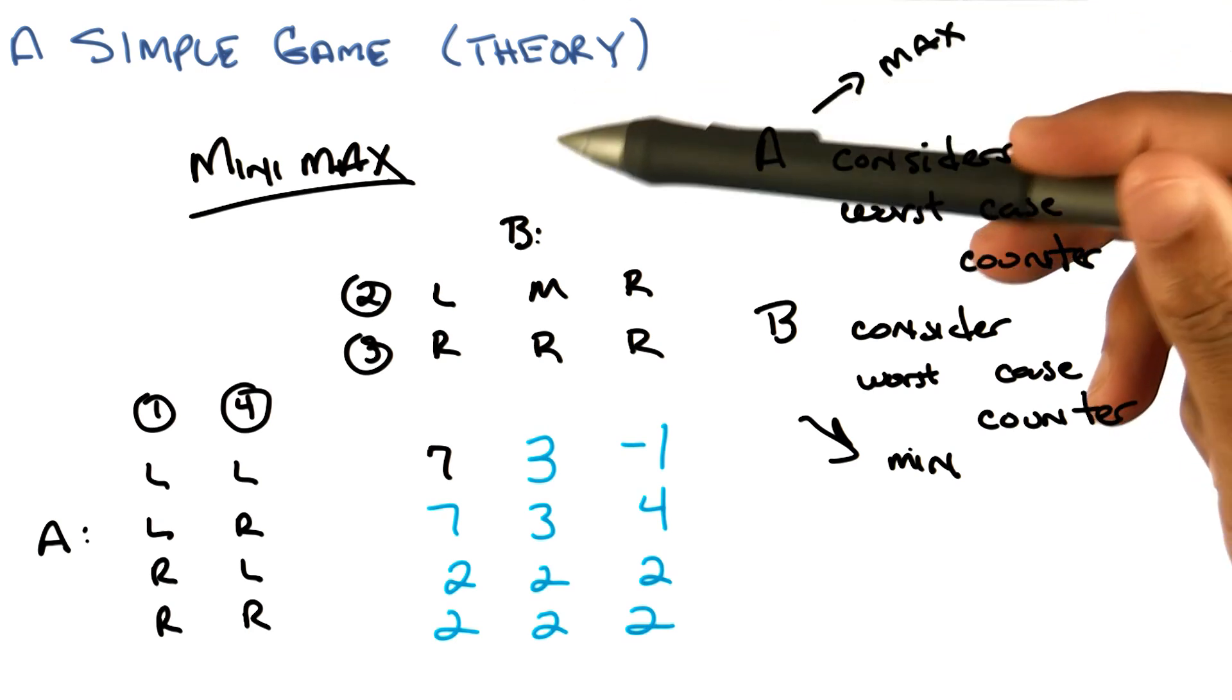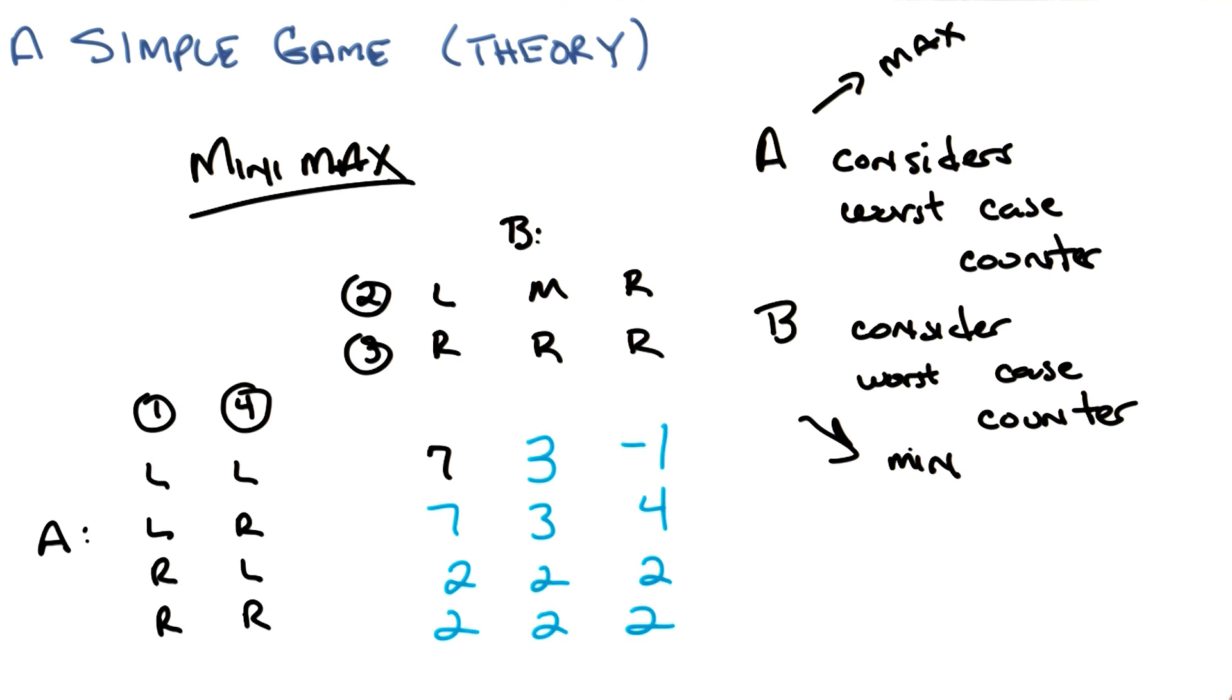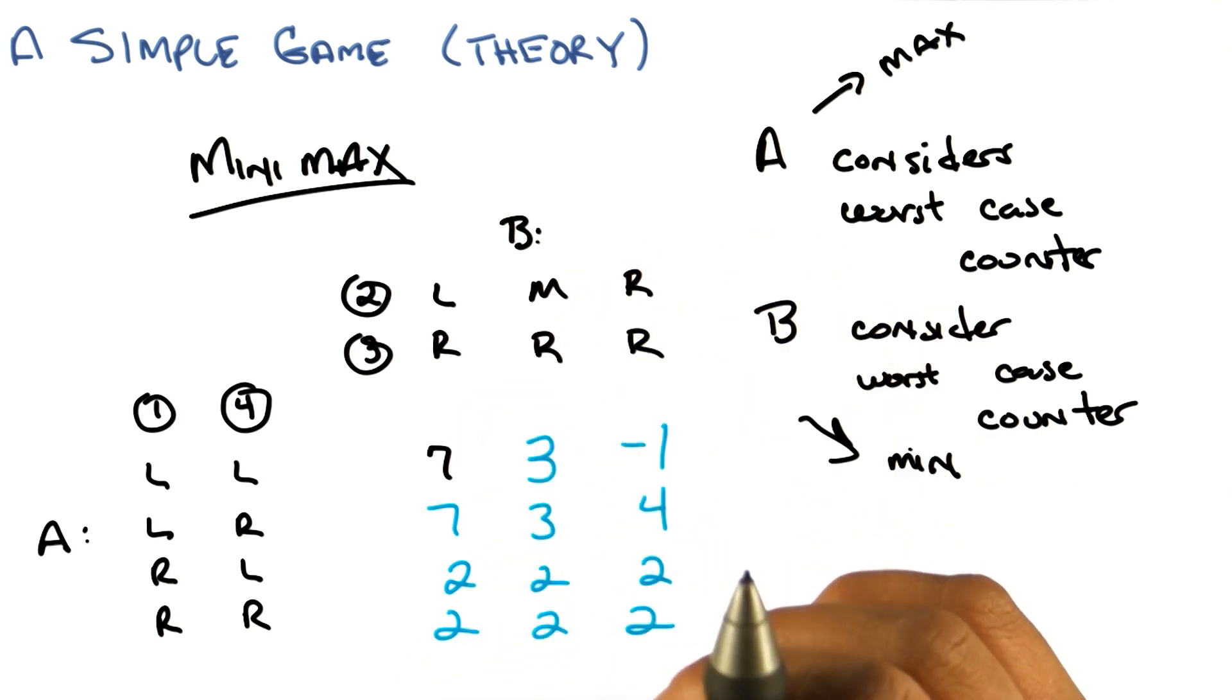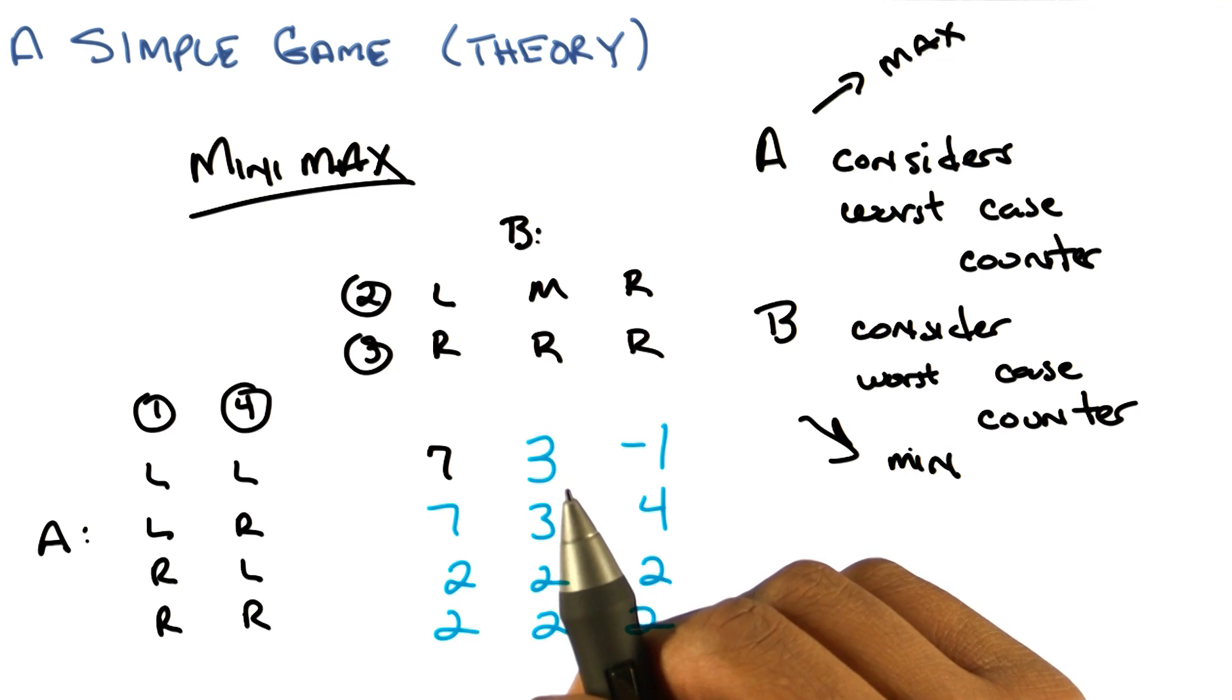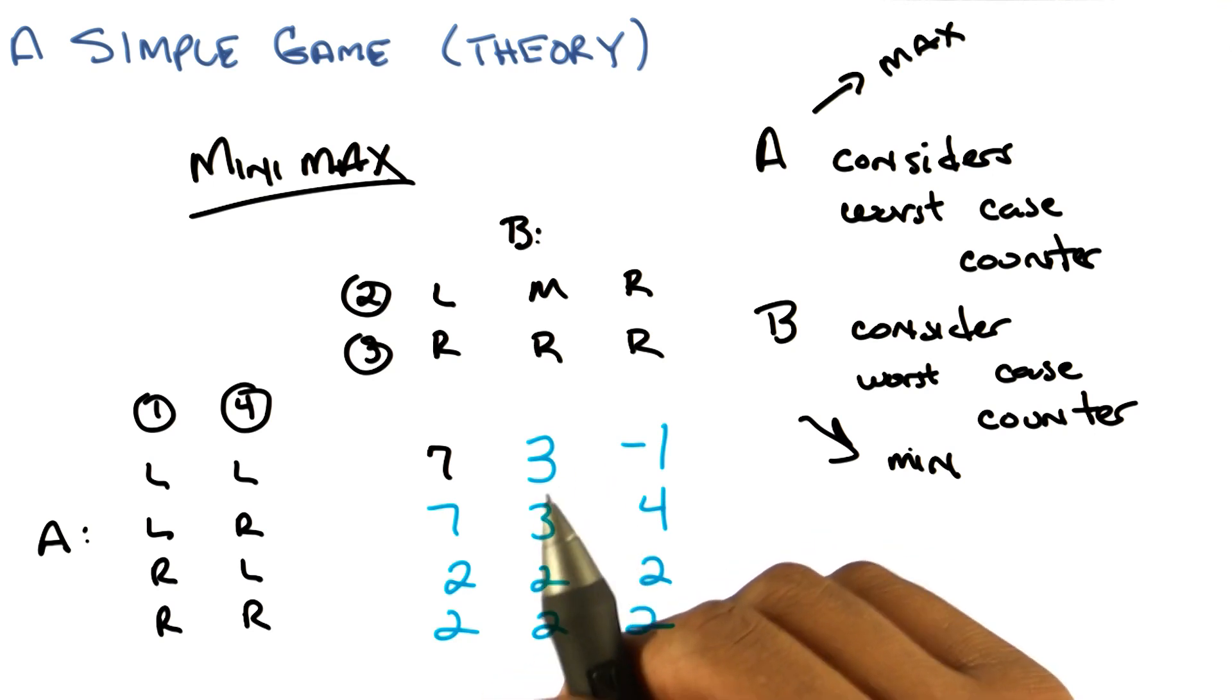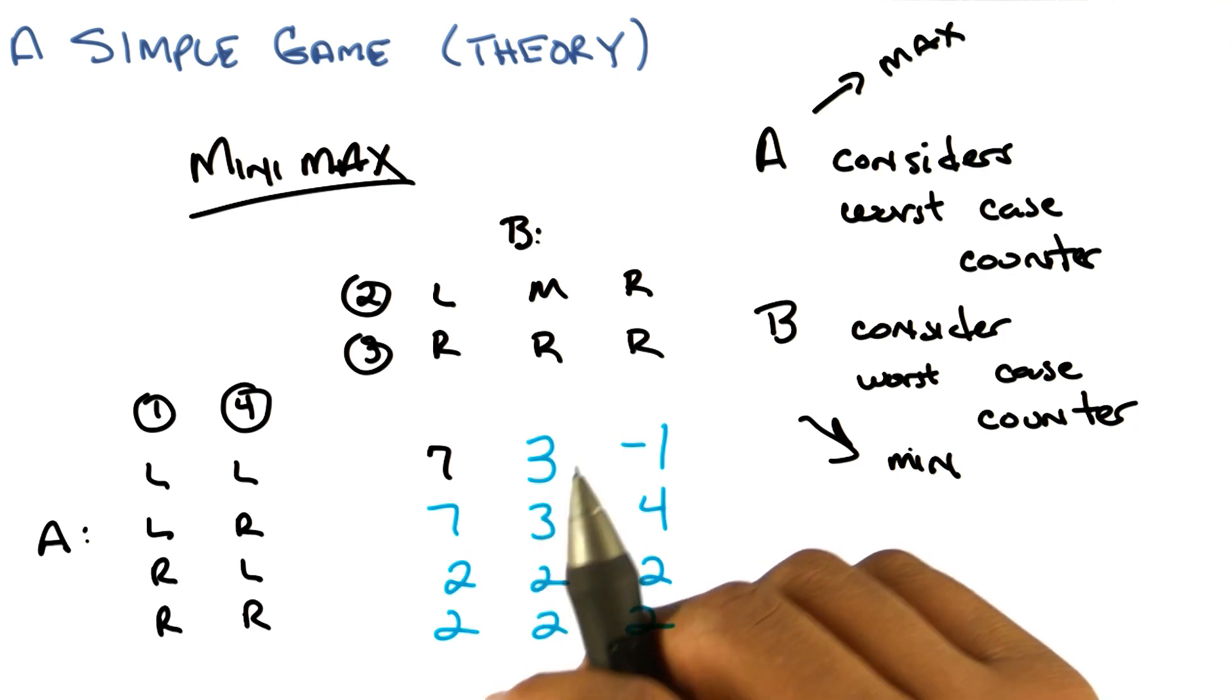Do you recall where you've seen minimax before, Michael, in some other class that you once taught or once took years and years ago? No. Minimax was exactly the algorithm that we used for game search in intro to AI. Oh, which was a game tree, which is just what we started with in this case, even though we turned it into a matrix. Exactly.